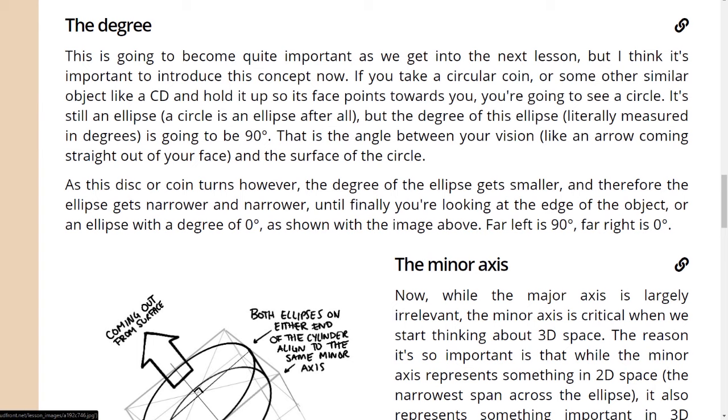It's still an ellipse. A circle is an ellipse, after all. But the degree of this ellipse, literally measured in degrees, is going to be 90 degrees. That is the angle between your vision, like an arrow coming straight out of your face, and the surface of the circle.